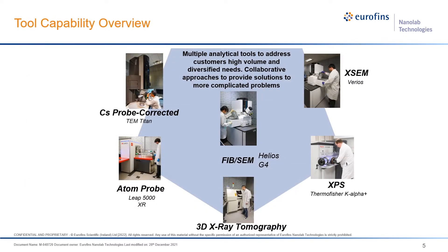Nanolab offers many advanced characterization tools, including Titan TEM, Leap 5000 Atom Probe, SEM, XPS, 3D X-ray, and the dual beam system I will talk about today. Nanolab has a total of 16 dual beam systems, including the Helios G4 system. The maximum sample size is a 4-inch wafer; larger and taller samples may need to be resized. Two of the dual beam systems are equipped with an EDS detector for chemical composition analysis.